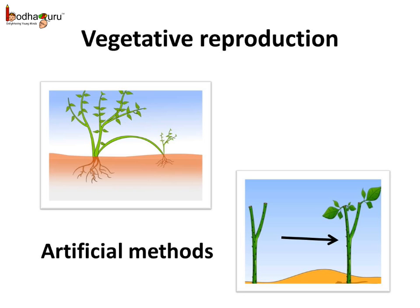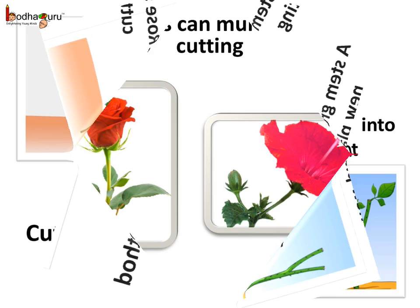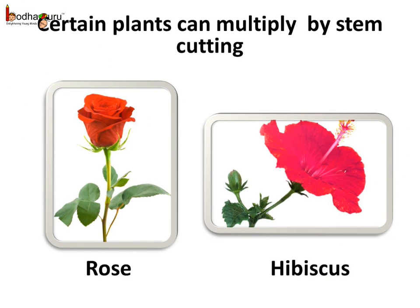We humans also use artificial methods involving vegetative reproduction to grow new plants. For example, we cut a part of a rose stem and place it in moist soil. After some time, roots come out of it and it grows into a new plant. This artificial way of vegetative reproduction is called cutting. The cutting method can also be used for sugarcane, hibiscus, and bougainvillea.